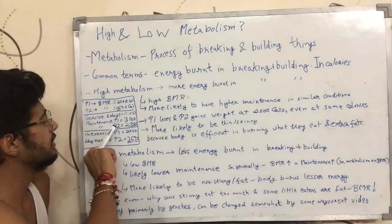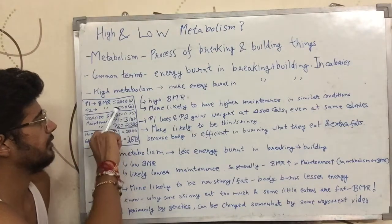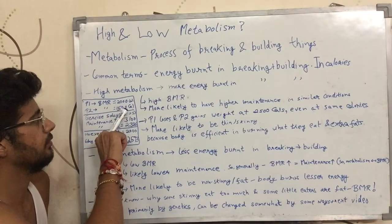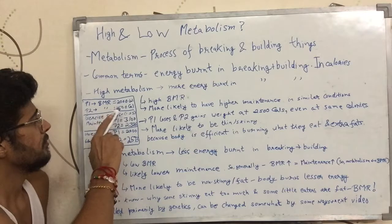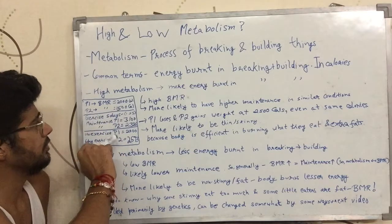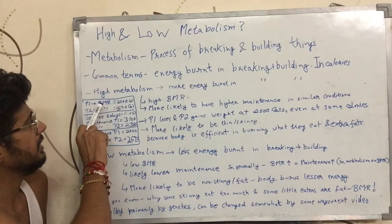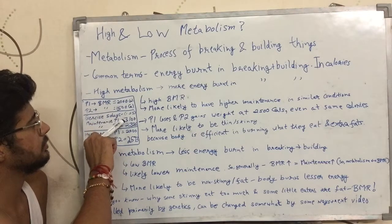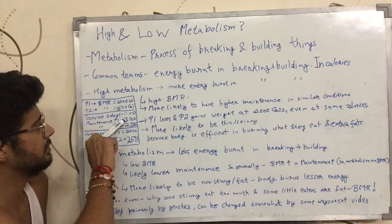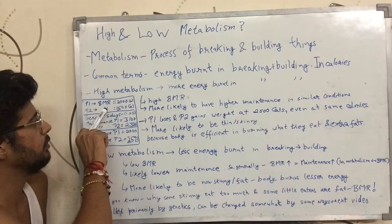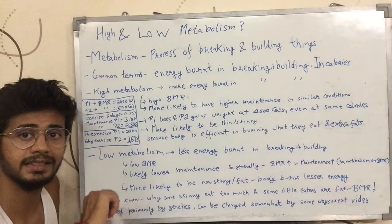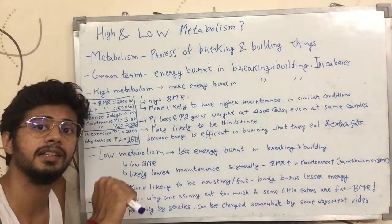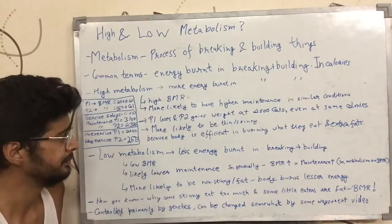The maintenance of P2 comes out to be 2325 — 1500 multiplied by 1.55. So P1 had more BMR, so maintenance is more. P2 has lesser BMR, so maintenance is lesser when given the same conditions.